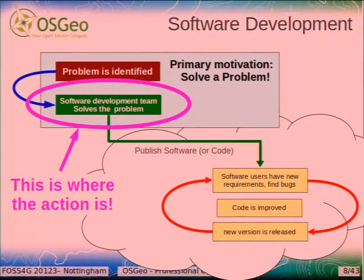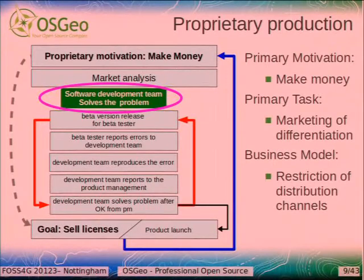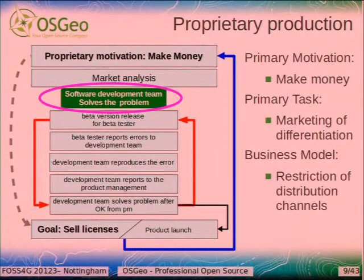That's obviously where the action is — where all the developers you're going to meet at this conference are working. The same thing works in the proprietary production model. You have a software development team that solves the problem, but you have a whole lot of stuff around it that we think you don't need. The primary motivation is a different one: it's to make money, which is not a bad thing. But if it's the primary motivation, sometimes stuff doesn't get done, because the idea is to make money and not to solve the problem. The primary task becomes market differentiation — not trying to solve the problem, but trying to be different and better than others.